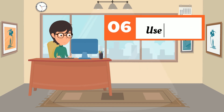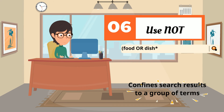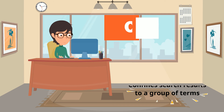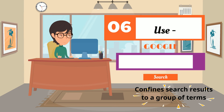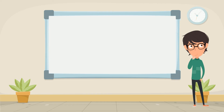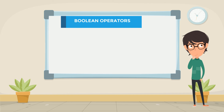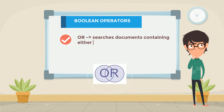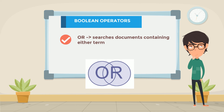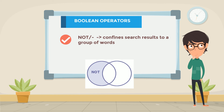Sixth, use NOT to limit your search results. In our example, you want to look for documents that contain food or dish but not desserts. When searching Google, use the minus sign instead of the word NOT to exclude a search term. AND, OR, and NOT are known as Boolean operators. AND searches documents containing both terms. OR searches documents containing either term. NOT confines search results to a group of terms.